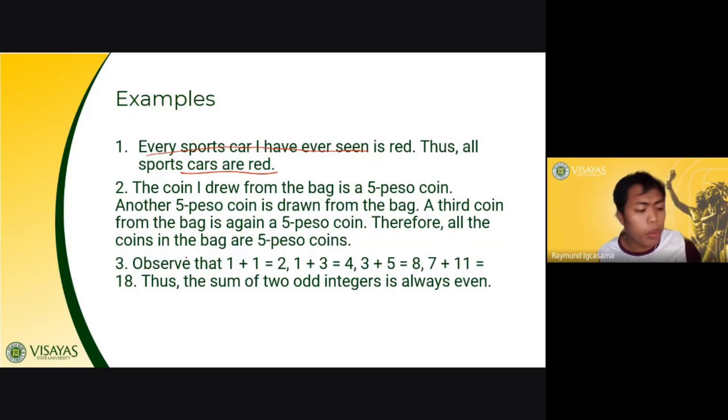Number two, the coin I drew from the bag is a 5 peso coin. Another 5 peso coin is drawn from the bag. A third coin from the bag is again a 5 peso coin. So from these three statements, three examples, three specific scenarios that you have experienced. From there, that is your basis to create an argument or conclusion saying that all coins in the bag are all 5 peso coins. It could be true. It could be false.